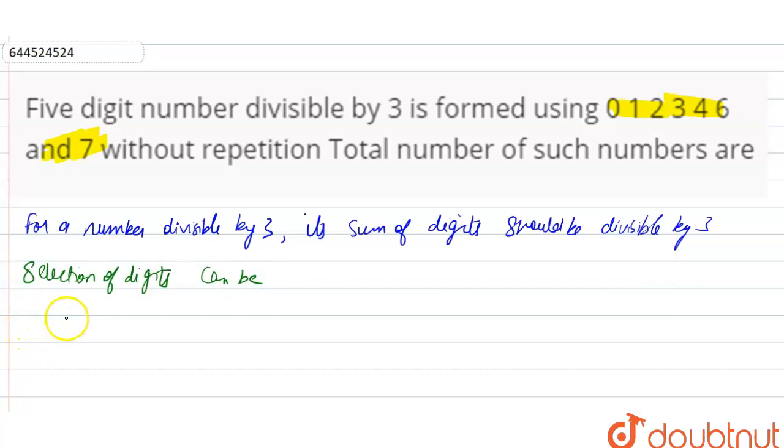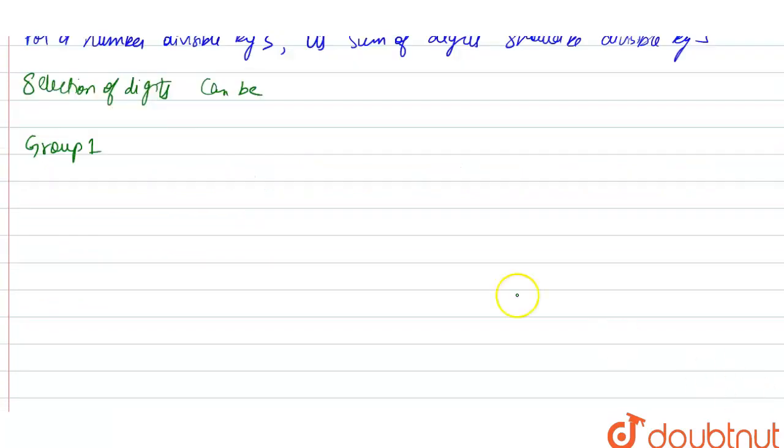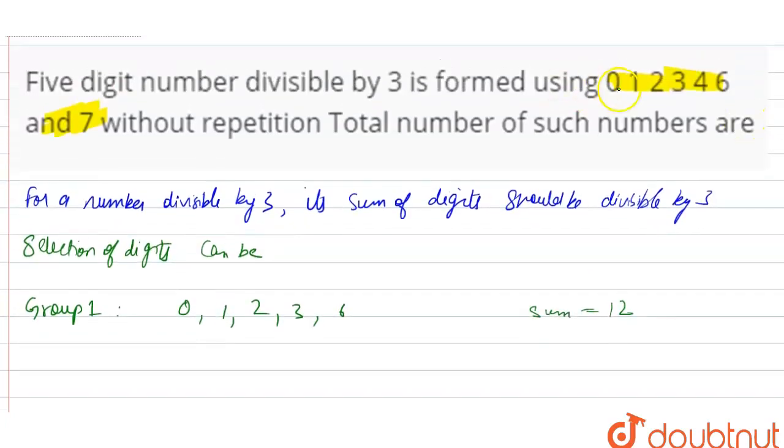So now we will make the groups. Group 1 will be 0, 1, 2, 3, 6. That's 0 plus 1 plus 2 plus 3 plus 6 equals 12. So sum is equal to 12 and it will be divisible by 3.